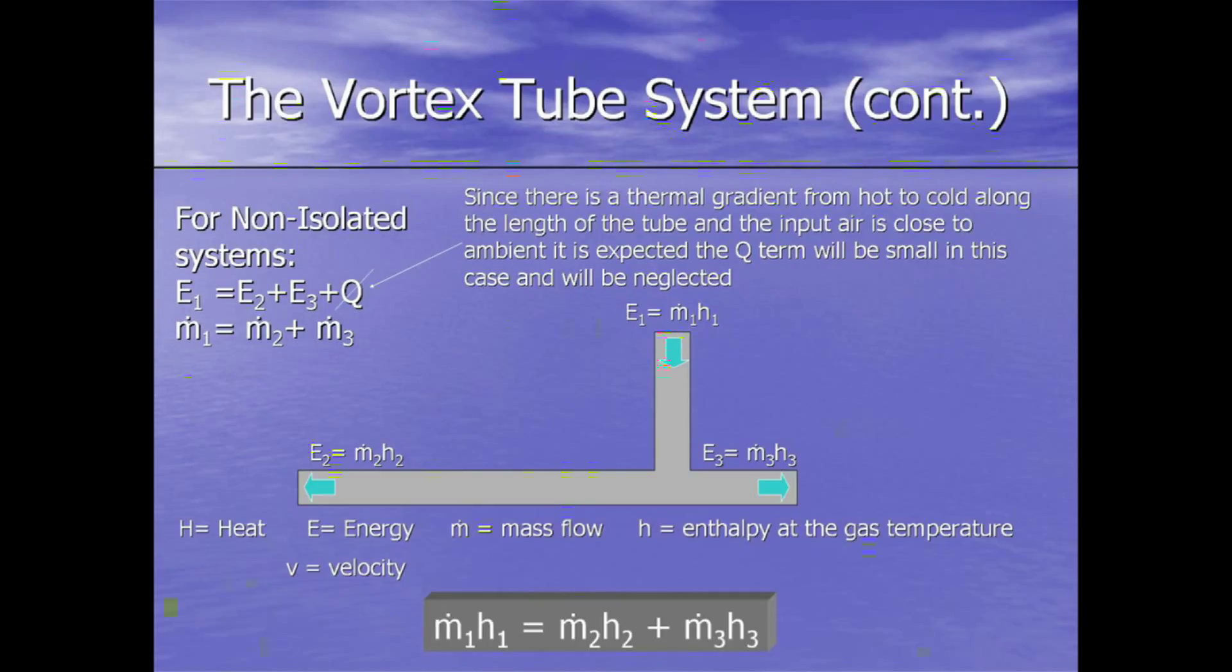There is also a Q term that is relevant because this is a non-isolated system and it's not isolated from the environment, so we would normally include that. However, a special case is a vortex tube with the input at ambient. The hot end is actually bleeding energy to the environment, however the cold end is getting energy from the environment. So it turns out it should be almost balanced, so we're going to consider that to be a small parameter as well.